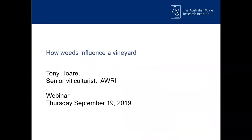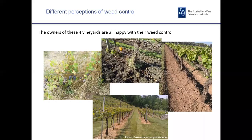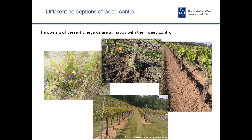Thank you Michael, and good morning everybody. What I'm looking at talking about today is the influence of weeds in a vineyard situation - how perceptions of weed control have changed over time in Australian viticulture. There's a range of images on this slide showing a different array of weed management options in vineyards: on the left a more natural approach, in the middle a weedicide strip using herbicides, above that cultivation, and to the right, clean cultivation. So what are the benefits of these different types of weed control and how do they influence vine growth?